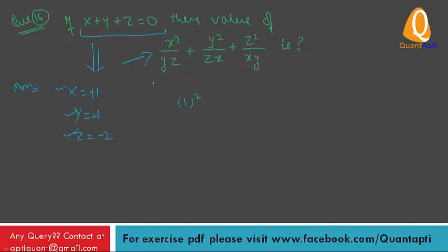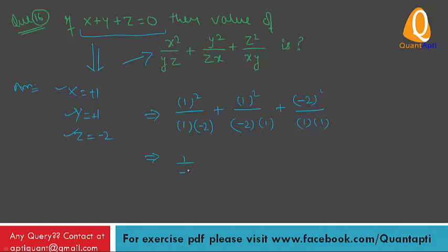Substituting: 1 square upon value of y is 1 and value of z is minus 2, plus value of y is 1 square upon value of z is minus 2 and value of x is 1, plus value of z is minus 2 whole square upon value of x is 1. This gives 1 upon minus 2 plus 1 upon minus 2 plus 4 upon 1.